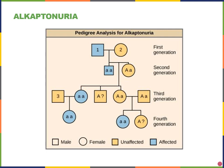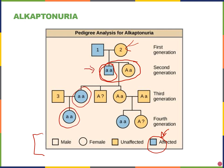With this pedigree, there's a key at the bottom reminding us that squares are males, circles are females, and blue individuals are those with the trait. Looking through the pedigree, you can often tell the genotype of a person just based on the pedigree. Alcaptanuria appears to be a recessive disorder because affected individuals have two recessive alleles. To be unaffected, you must have at least one big A allele.